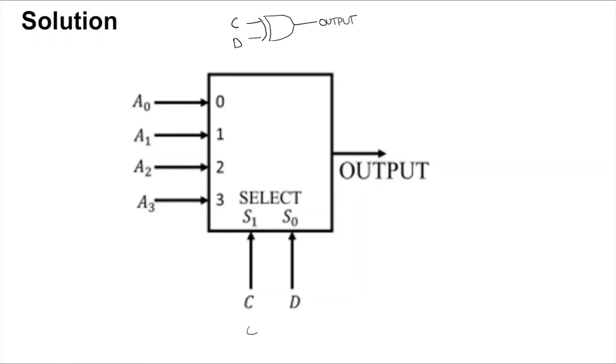When you get C and D as 0, 0, the output will get the value of A0. What you want is output to be 0, so you will tie A0 to 0.